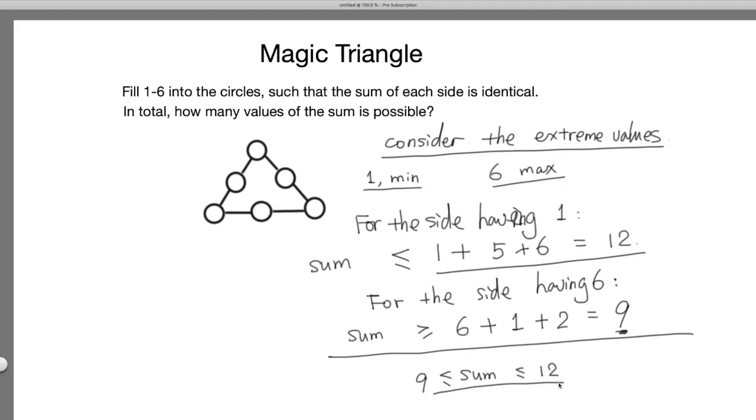The previous question, when the sum equals 10, it falls into this range and that's possible. Now the next question: can we verify each of those values are possible?